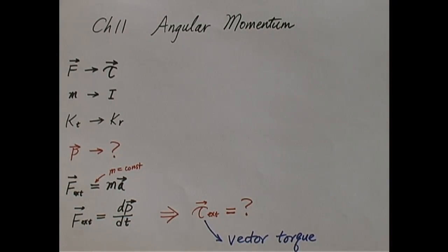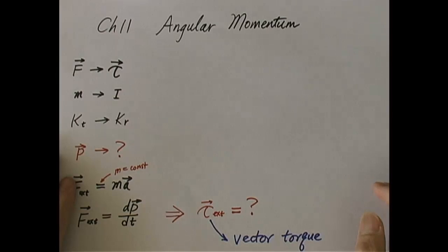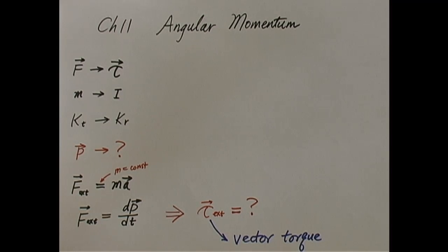Chapter 11, Angular Momentum. In the previous chapter, we introduced the kinematics and dynamics of rotation of a rigid object about a fixed axis. We started with the kinematic description, which likens the kinematics of rotation of a rigid object about a fixed axis to that of one-dimensional translational motion. So we replaced x with theta, v with omega, a with alpha, and so forth.